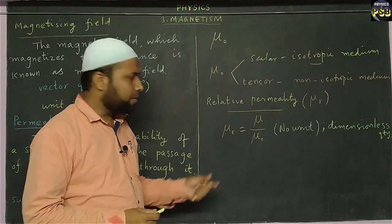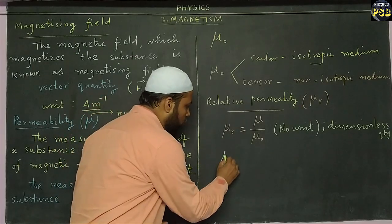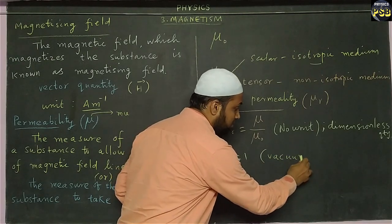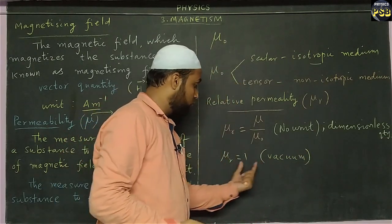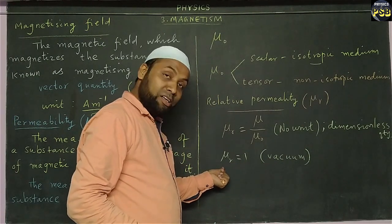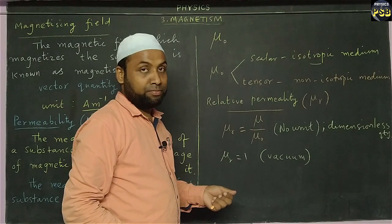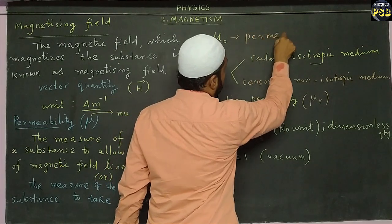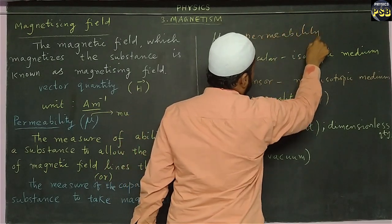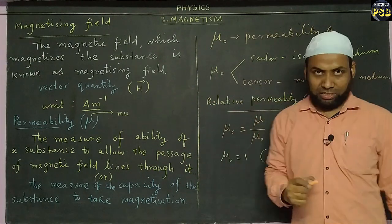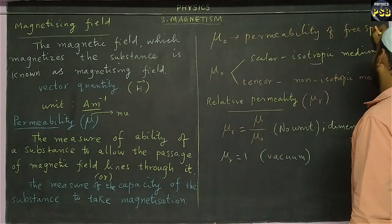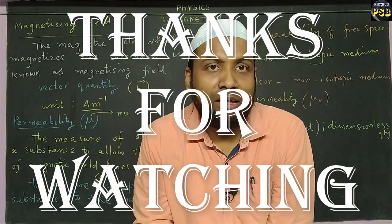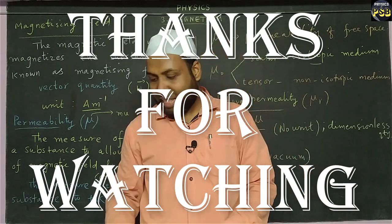The value of relative permeability is one for vacuum. Vacuum is free space, and it has a relative permeability value of one. Mu-naught means the permeability of free space, which is vacuum. I hope this video is useful. If you have any kind of doubt related to this topic, kindly put your questions in the comment section. Thanks for watching.